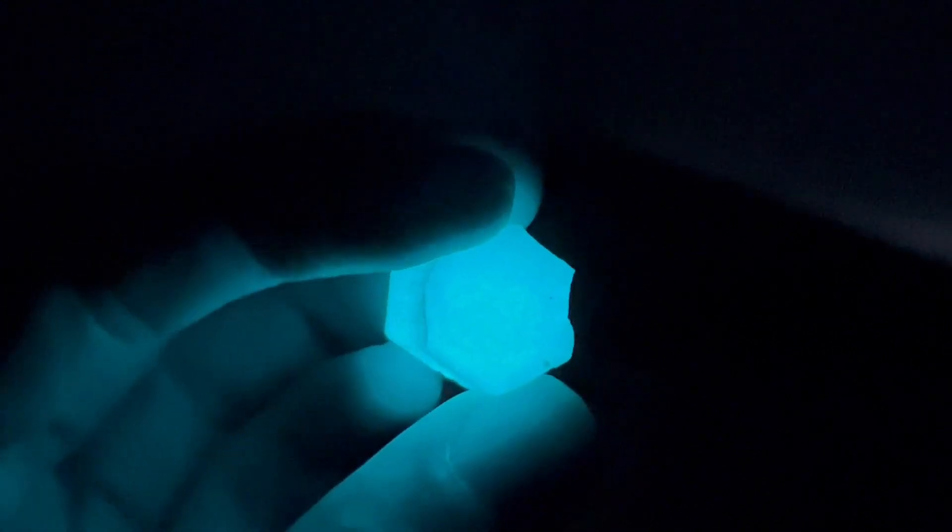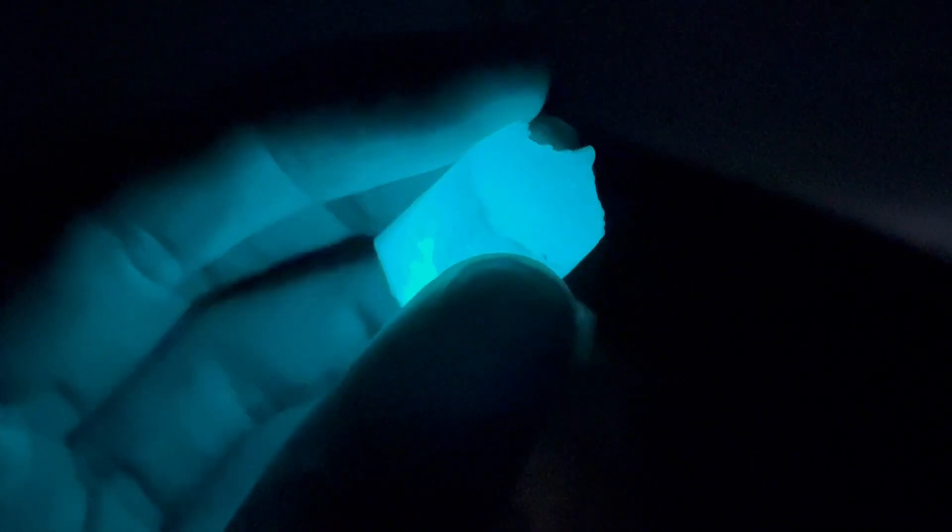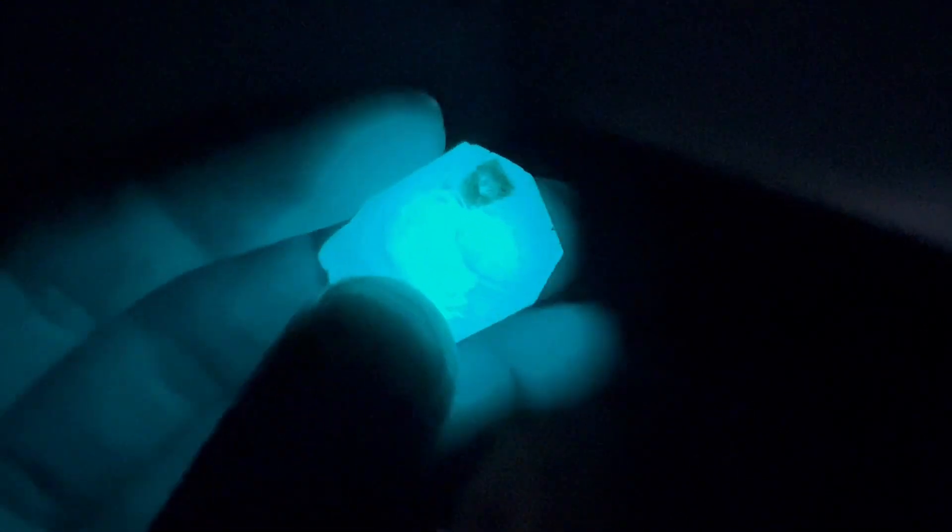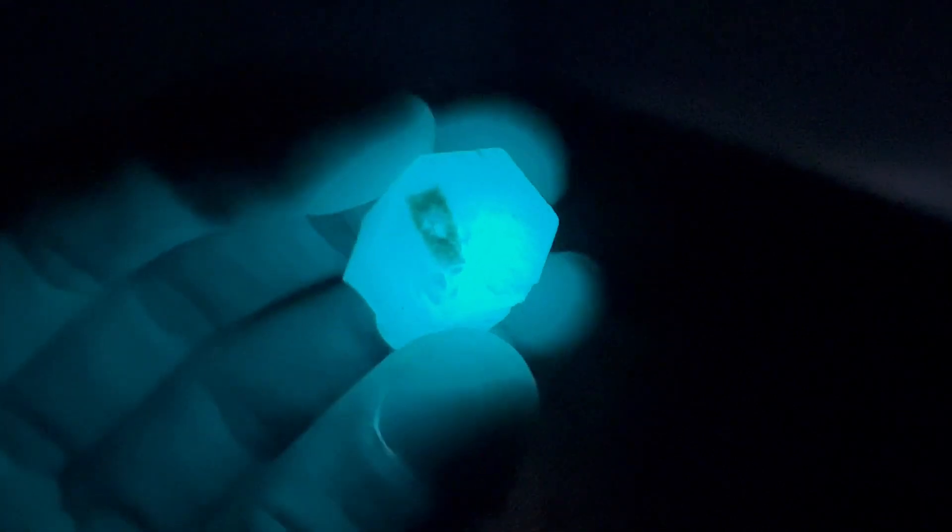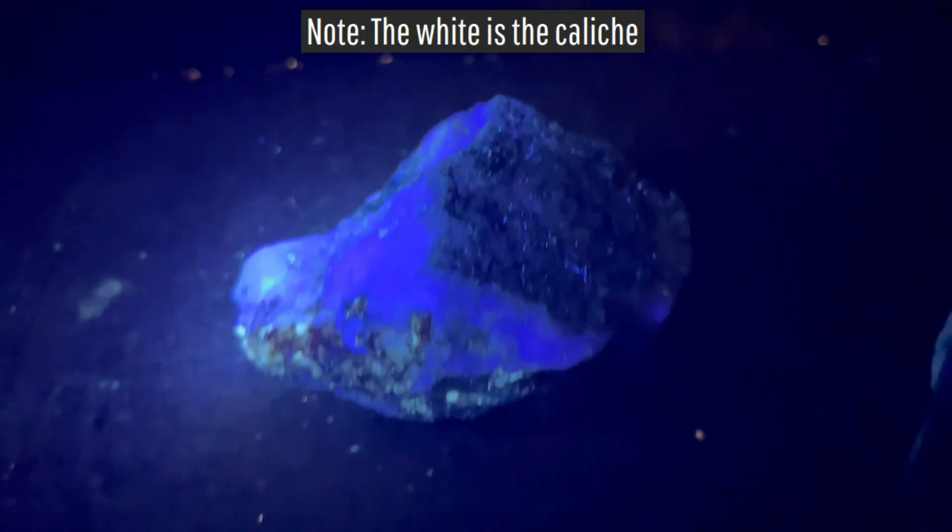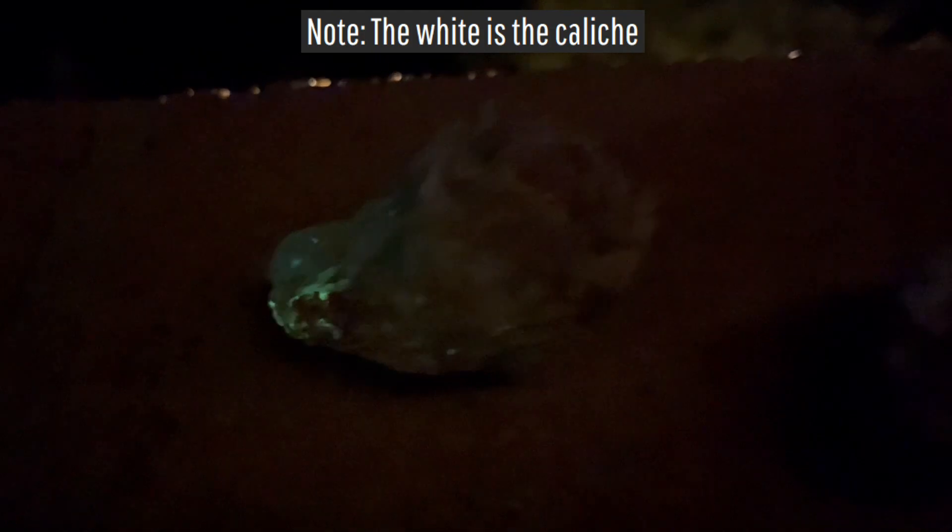While strontium aluminate is manmade, there are a number of natural compounds and minerals which are phosphorescent to a lesser extent, such as this piece of caliche, aka calcium carbonate from Arizona, or this piece of magnesite, aka magnesium carbonate, which glows as a white color after the UV light I used to trigger the reaction was turned off.